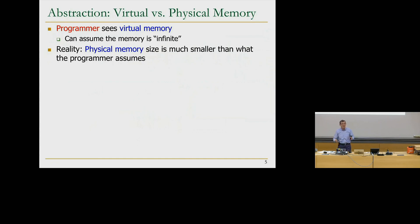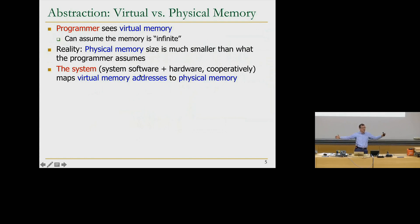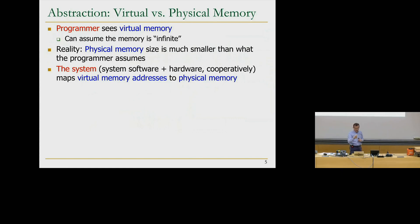Reality is that physical memory size is much smaller than what the programmer assumes. Let's say a 2-gigabyte memory. But if you look at address spaces today, it's 2 to the 48, which is much larger than 2 gigabytes — or 2 to the 64, if you push it to the limits. The system provides the illusion to the programmer that memory is actually infinite, or equal to the space specified by the ISA. It's the system software and hardware cooperating together.